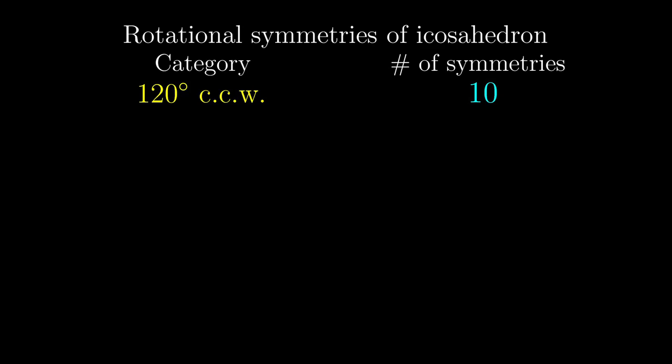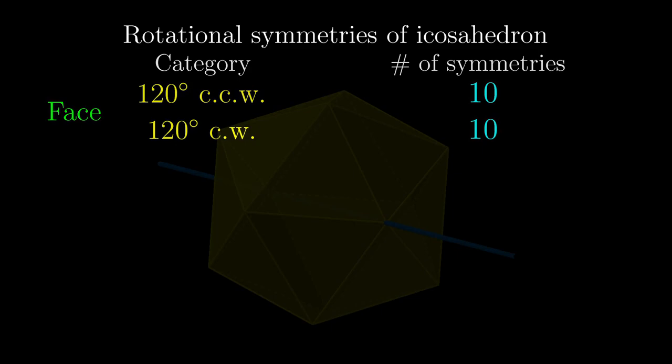So now we can record all these on a table. Very similarly, by rotating in another direction, we get another category with 10 symmetries.